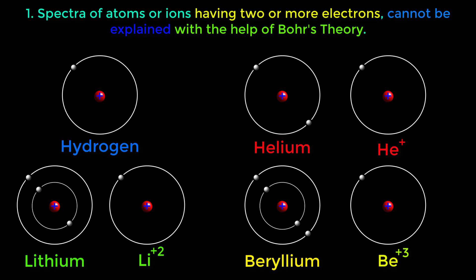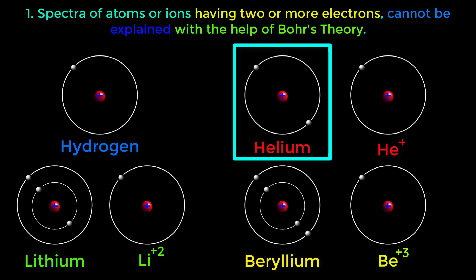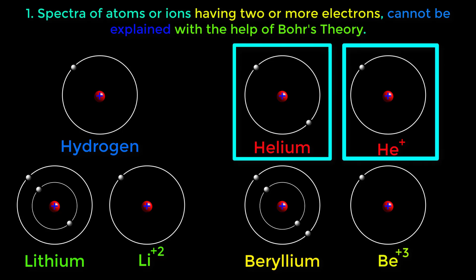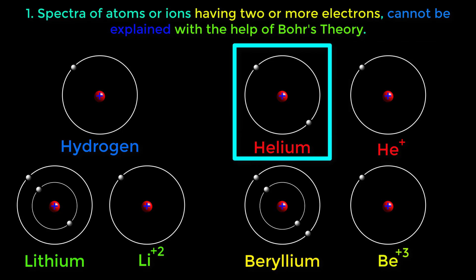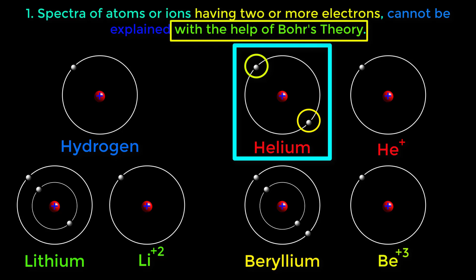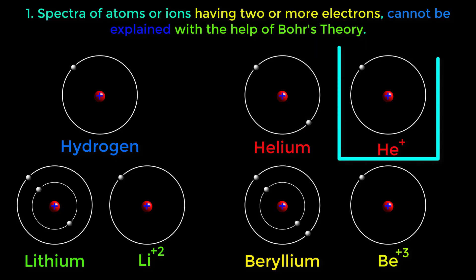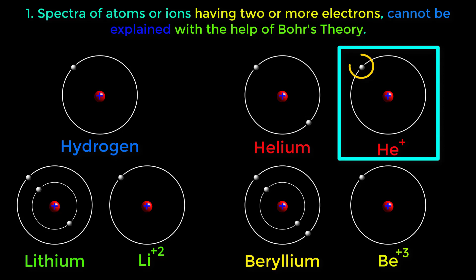Now look at the atomic structure of this helium atom and this helium ion. In this helium atom there are two electrons, so the helium atom cannot be explained with Bohr's theory. On the other hand, helium ion has only one electron around the nucleus, so helium ion can be explained with Bohr's theory.